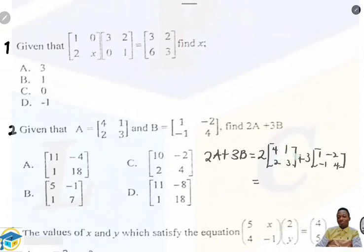each element in matrix A. So we have 2 multiplying 4, we get 8. 2 multiplying 1, we get 2. 2 multiplying 2, we get 4. 2 multiplying 3, we get 6. So we have a new matrix after the multiplication.